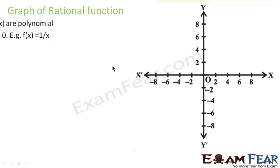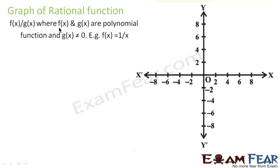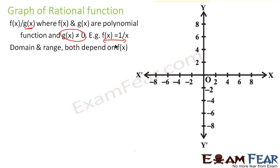Now let's take the rational function. A rational function has the form f(x)/g(x), where g(x) ≠ 0 — if g(x) = 0 it becomes undefined (infinity). An example is f(x) = 1/x. Here, both the domain and range depend on the function. For f(x) = 1/x, x cannot be 0. Similarly, for 1/(x − 2), x cannot be 2. So domain and range both depend on the function.